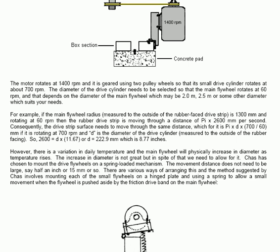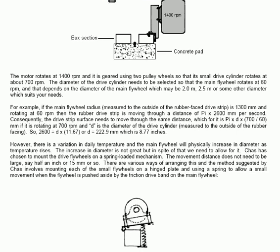For example, if the main flywheel radius measured to the outside of the rubber-faced drive strip, that is, is 1300 millimeters and rotating at 60 RPM, then the rubber drive strip is moving through a distance of pi times 2600 millimeters per second. Consequently, the drive strip surface needs to move through the same distance, which for it is pi times d times 700 divided by 60 millimeters. If it is rotating at 700 RPM and d is the diameter of the drive cylinder measured to the outside of the rubber facing, so 2600 equals d times 11.67, or d is 222.9 millimeters, which is 8.77 inches.